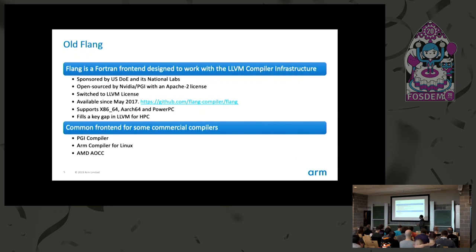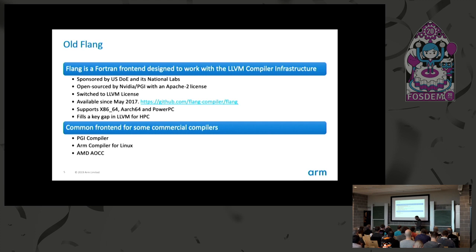The old Flang project was designed to generate LLVM IR and interface with the LLVM infrastructure. It was sponsored by the US Department of Energy and its national labs, who contracted with PGI (NVIDIA) to take out the front end of their compiler, make it generate LLVM IR, and open source it. It was open-sourced under the Apache 2 license, later switching to the LLVM license, and has been available since May 2017. It runs on AArch64, x86-64, and PowerPC, filling the key gap in the LLVM story for HPC — there was previously no free Fortran frontend generating LLVM IR.